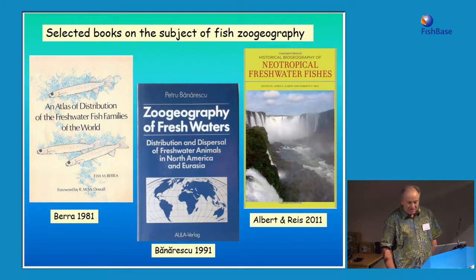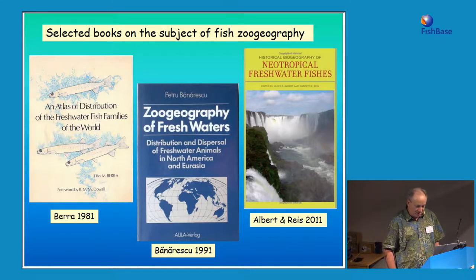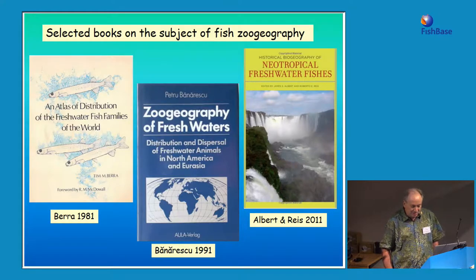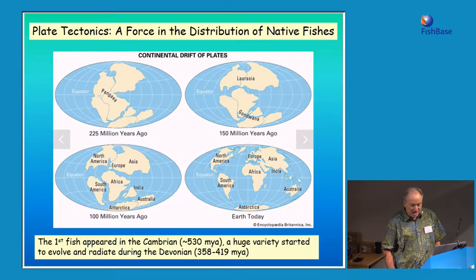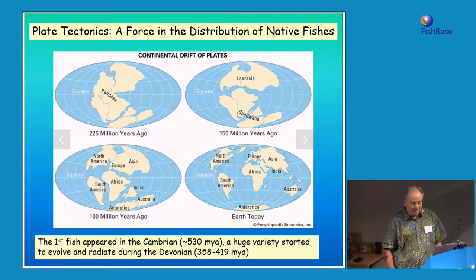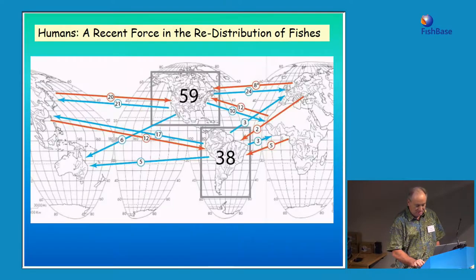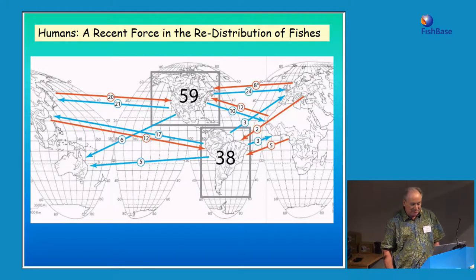There are many books devoted entirely or nearly so to fish zoogeography — examples include Berra's 1981 Atlas on the Distribution of Freshwater Fish Families, Banarescu's 1991 book on freshwater animals of North America and Europe, and Albert and Reyes's 2011 book on the zoogeography of Neotropical freshwater fishes. According to zoogeography, over the past 200-plus million years, plate tectonics interacting with biological evolution has helped determine how fishes and other organisms are naturally distributed around the world.